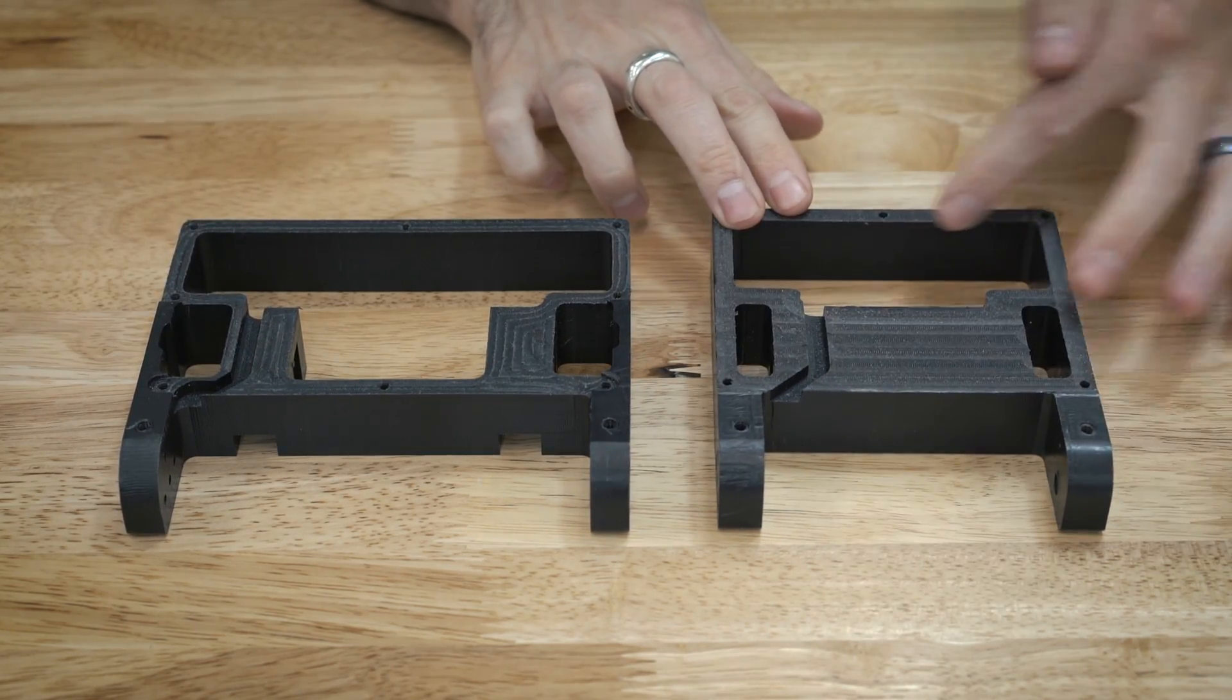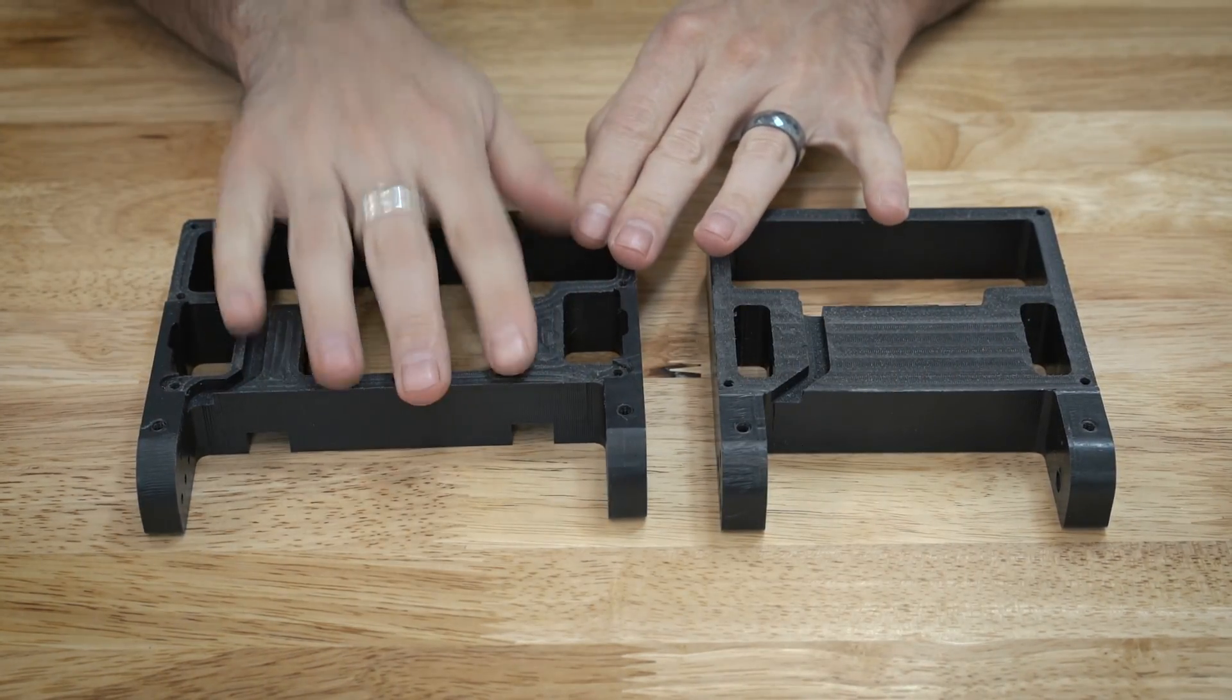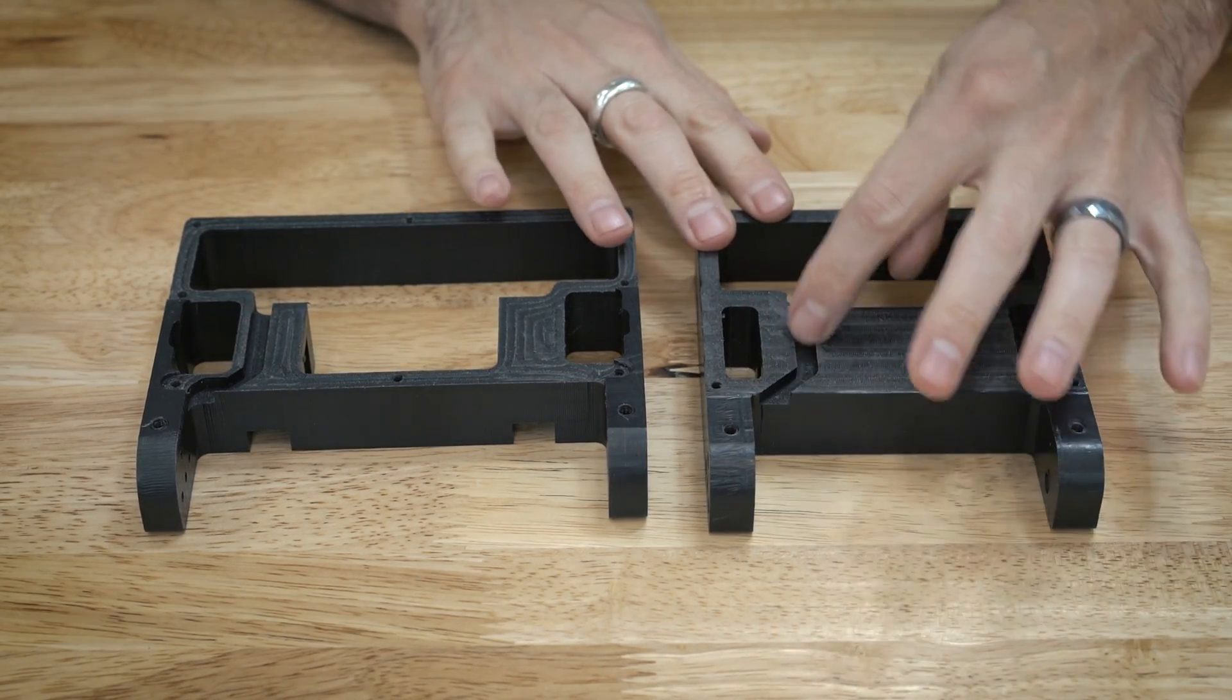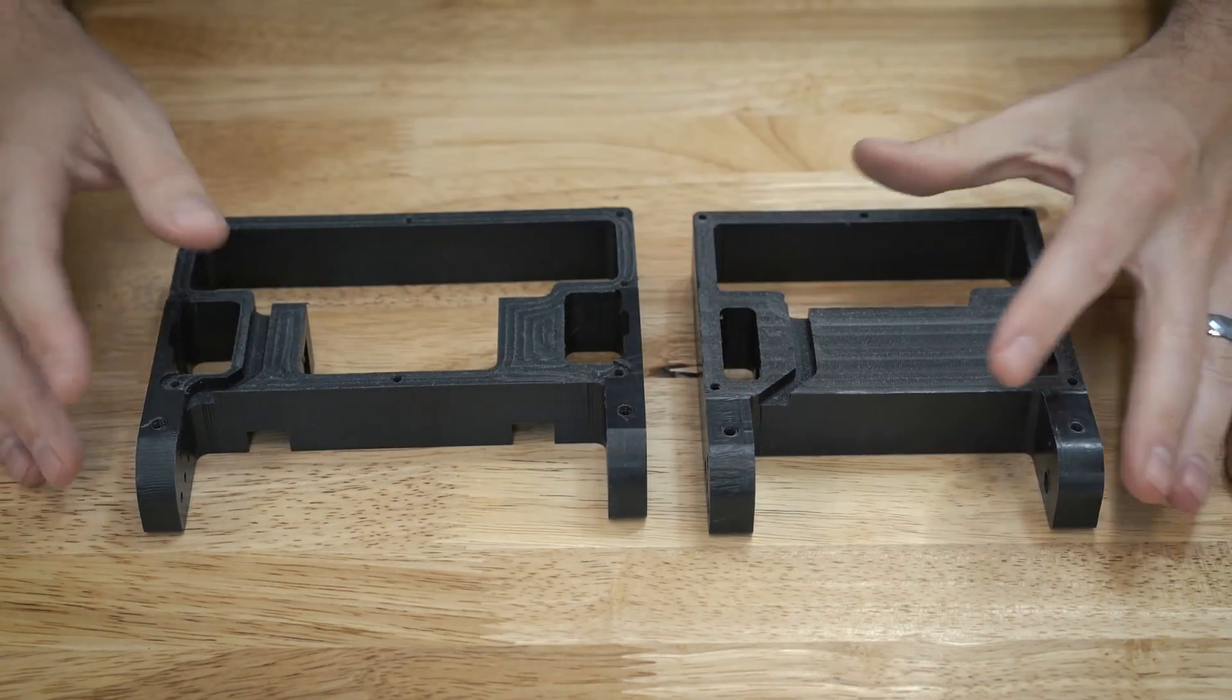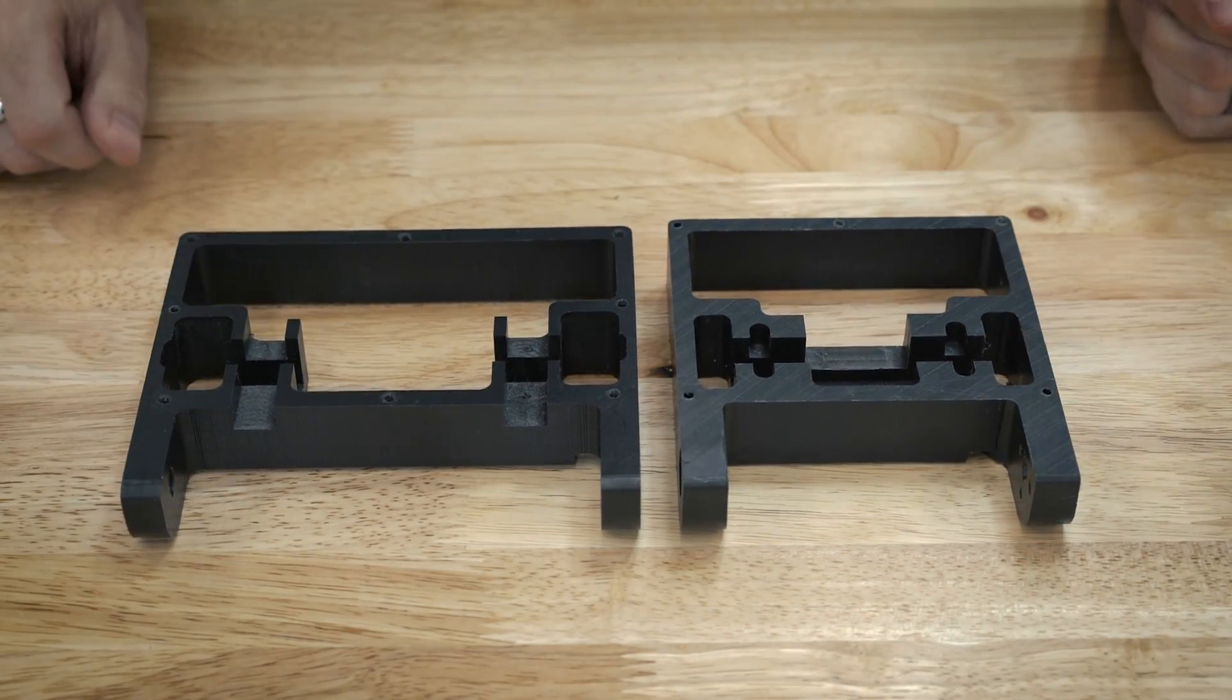They both have the cutout in the bottom for the armor plate. This one's just a little bit more complicated. They both share the same weapon channel. So overall, they're more similar than not. It's just the overall form factor has changed a bit.